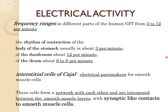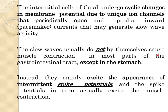The frequency of slow waves ranges in different parts of the GI tract from 3 to 12 per minute. The body of the stomach contracts at 3 per minute, the duodenum at 12 per minute, and the ileum at 8 to 9 per minute. The interstitial cells of Cajal are the electrical pacemakers for smooth muscle cells, forming a network interposed between smooth muscle layers with synapse-like contacts to the smooth muscle cells.